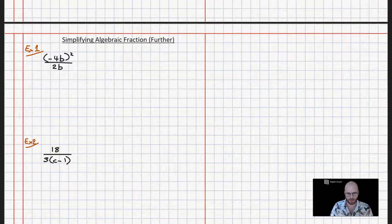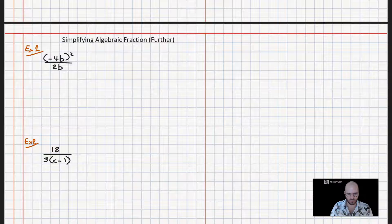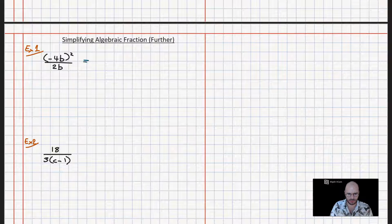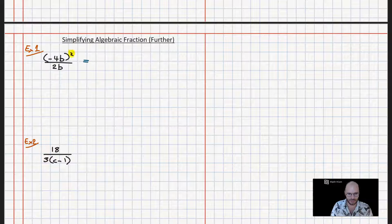Now example one, we have minus 4b all squared all over 2b. We want to simplify this out into its simplest form. To do this, first thing we need to do is deal with this squared symbol up here.